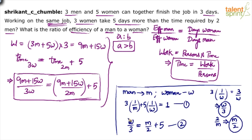Both equations use the same variables m and w. The first is a work equation: total work of one unit equals three times the capacity of a man plus five times the capacity of a woman. The second is a days equation: number of days for three women equals number of days for two men plus five. Solve these two equations to get the answer. If options are given, preferably use the substitution method — it's much faster.